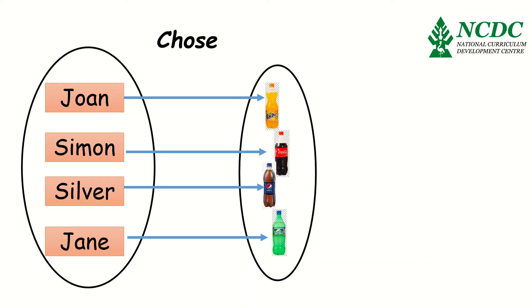This still represents the same piece of information showing that Joan chose a Fanta, Simon chose a Coke, Silva chose a Pepsi, and Jane chose a Sprite. I hope we are still together. Now, in the next set of activities, we will be representing our information like this. And this is called an arrow diagram.